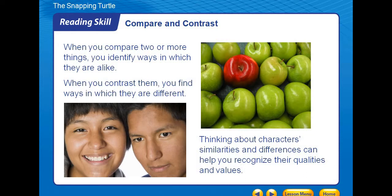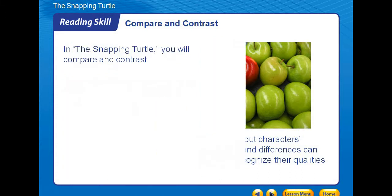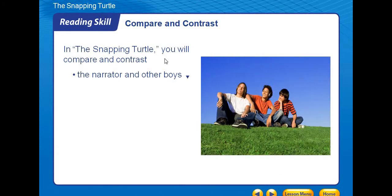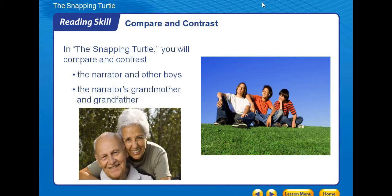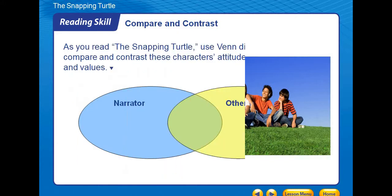Thinking about characters' similarities and differences can help you recognize their qualities and values. When you discuss two different characters, you will recognize two different personalities, and maybe find something the same. We did this activity in class — I asked you who is your best friend and why, and whether you find anything the same or different between you. In 'The Snapping Turtle,' you will compare and contrast the narrator, other boys, the narrator's grandmother, and grandfather.